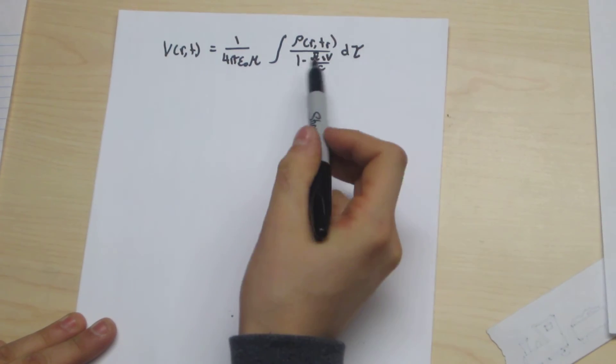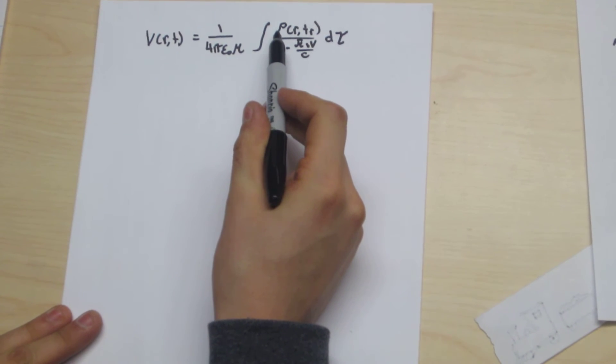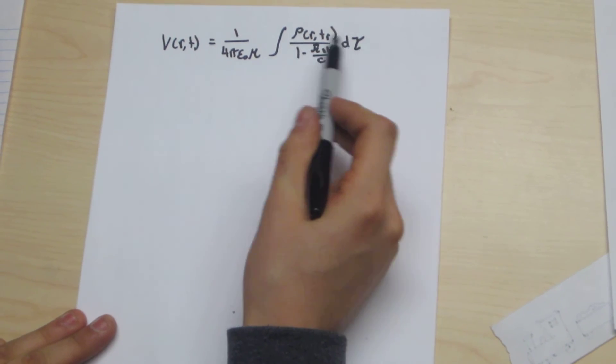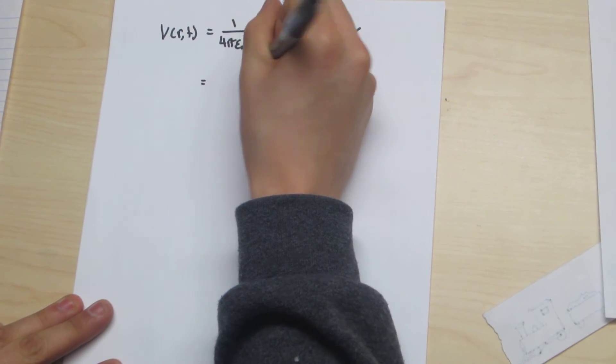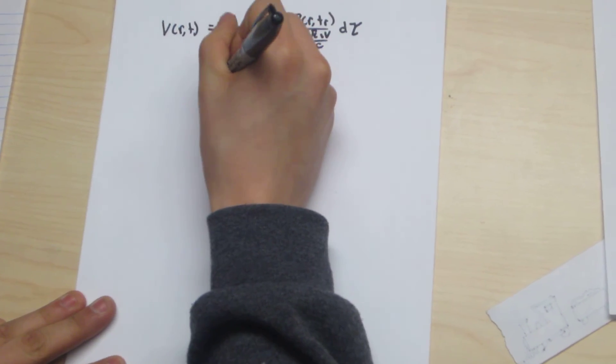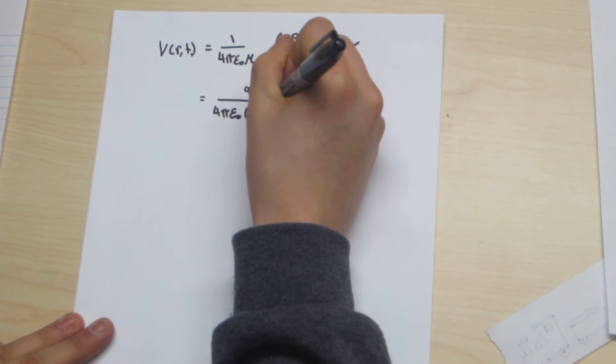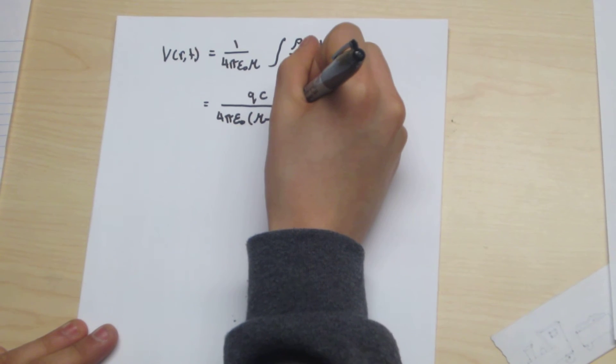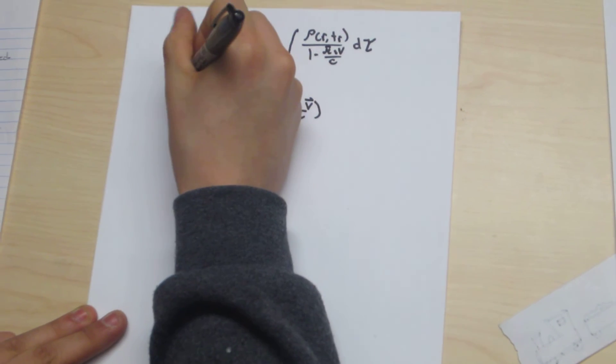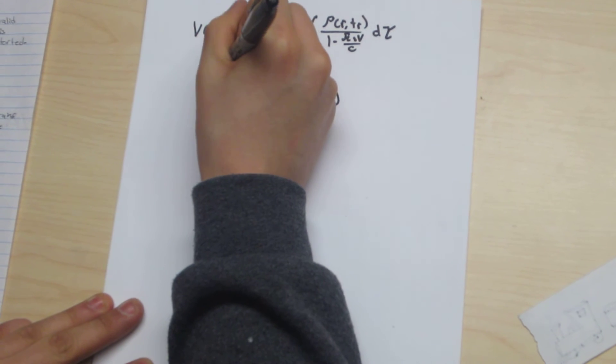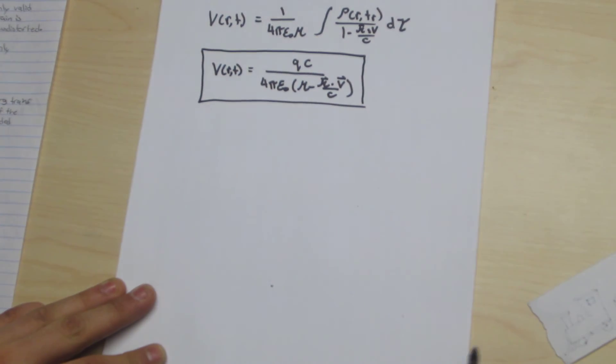And now in this case we are again able to remove this factor outside of the integral, and then our charge density over our volume integral is now q. And after some minor algebra, where I multiply the top and the bottom by the speed of light c, we are left with our scalar potential for moving charge along a specified trajectory as equal to that expression.